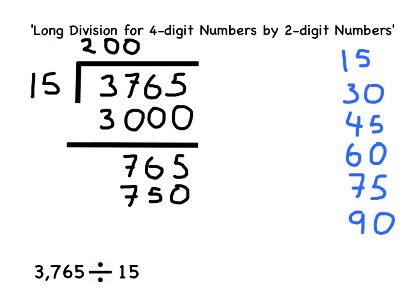I can then use column subtraction to work out this subtraction. First using a ruler to draw a horizontal line to separate my working out. 765 subtract 750 equals 15. So I'm going to write that underneath. As I subtracted a chunk of 50 15s, I'm going to write 50 at the top of the division.